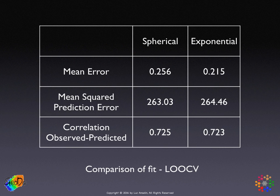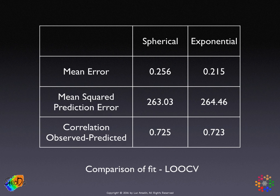At the end, you have a table where, for example, in the Baltimore data set we compare the spherical to the exponential model. Based on a leave-one-out cross-validation exercise, the average error is a little smaller for the exponential, but the mean-squared error is a little smaller for the spherical model, and the correlation between observed and predicted is a little larger for the spherical model. So even though the average error is slightly larger for the spherical model, the two more robust criteria — mean-squared error and correlation — give a slight edge to the spherical model. In this particular example, one would have to conclude the two models are basically equivalent. That concludes our discussion of spatial prediction.